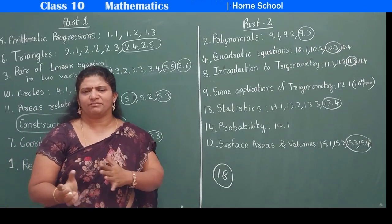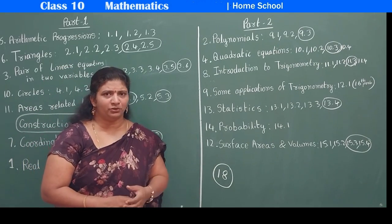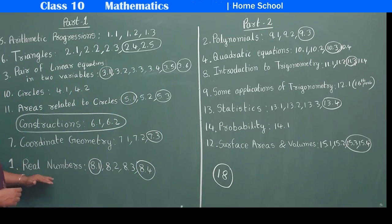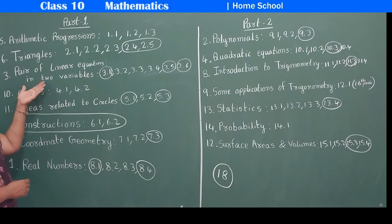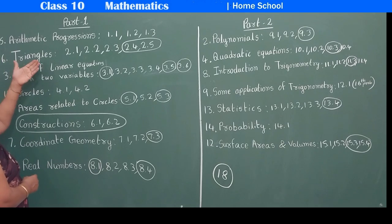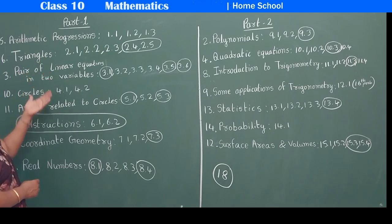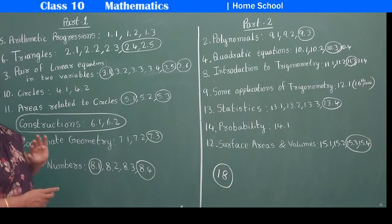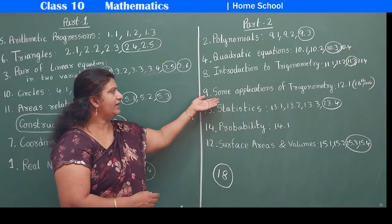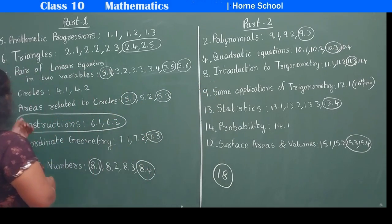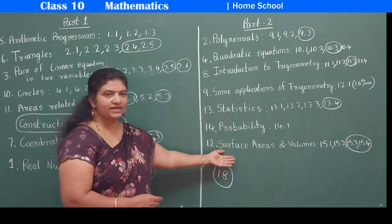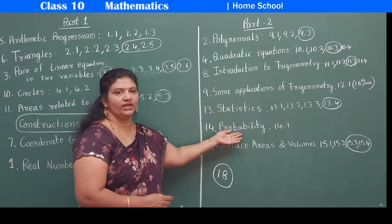This year you will be having the same type of textbooks, part 1 and part 2. Part 1 starts with chapter 1: Real Numbers, then Polynomials, then Pair of Linear Equations, then chapter 4: Quadratic Equations, chapter 5: Arithmetic Progression, chapter 6: Triangles, and chapter 7: Coordinate Geometry — with this, part 1 completes. Part 2 starts with chapter 8: Introduction to Trigonometry, chapter 9: Some Applications of Trigonometry, chapter 10: Circles, chapter 11: Areas Related to Circles, chapter 12: Surface Areas and Volumes, chapter 13: Statistics, and chapter 14: Probability.